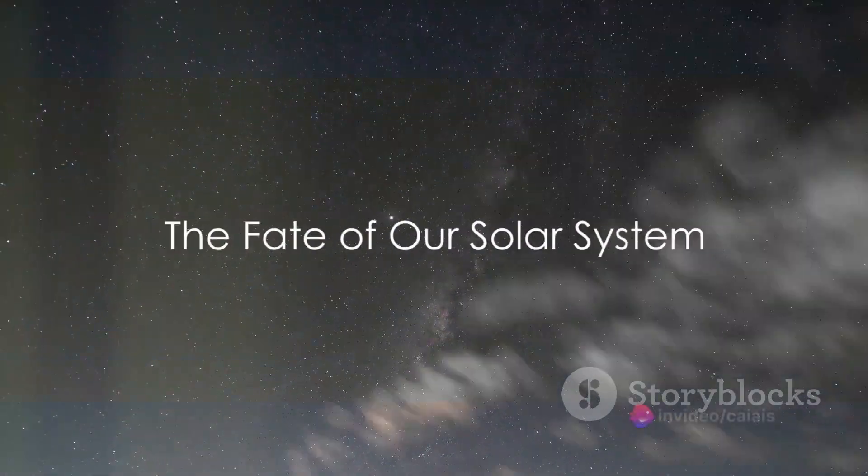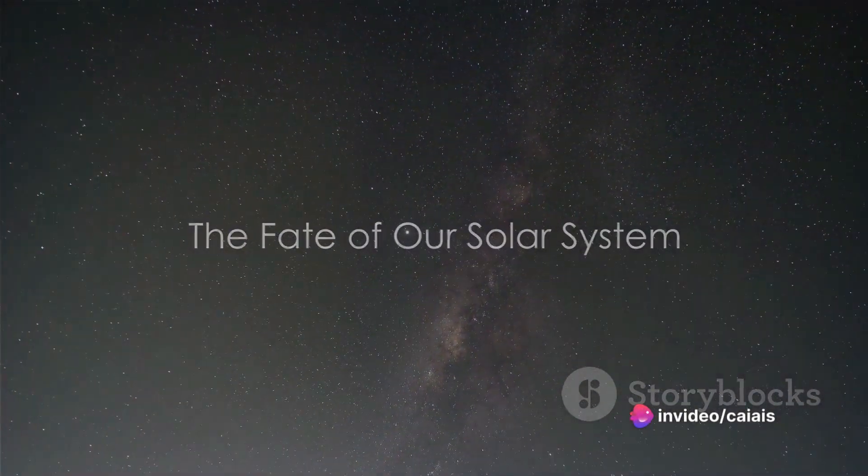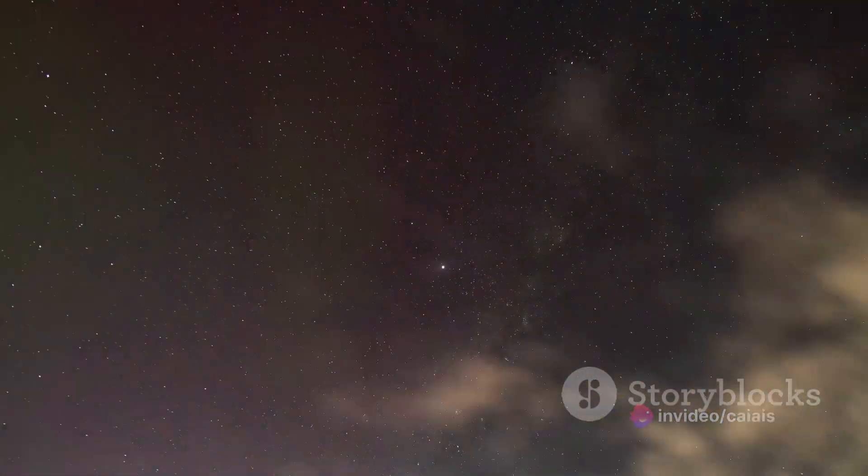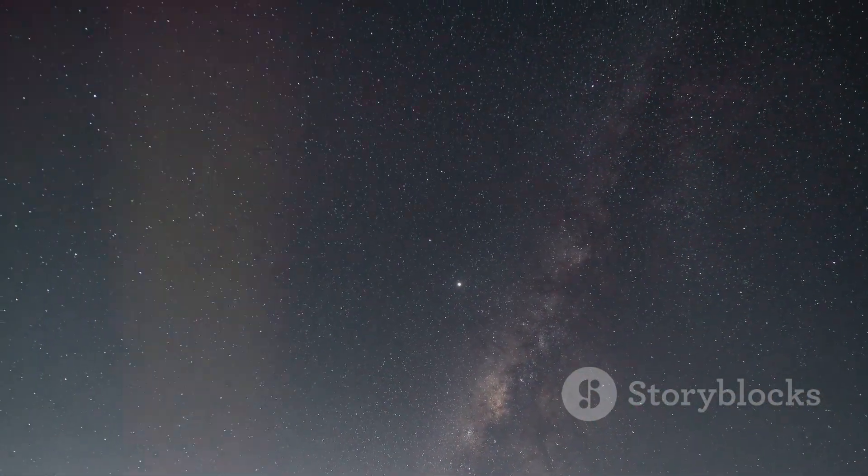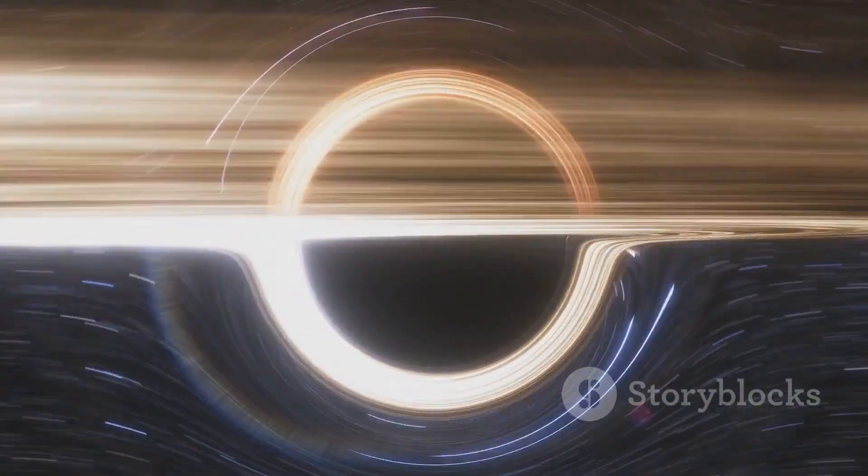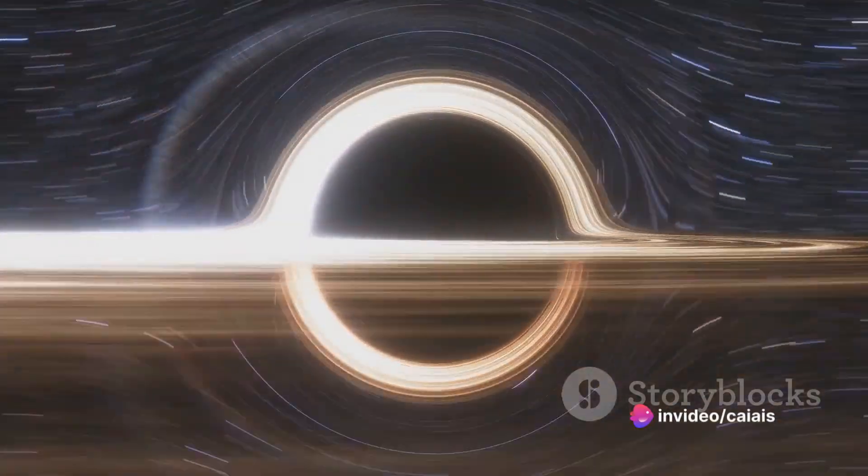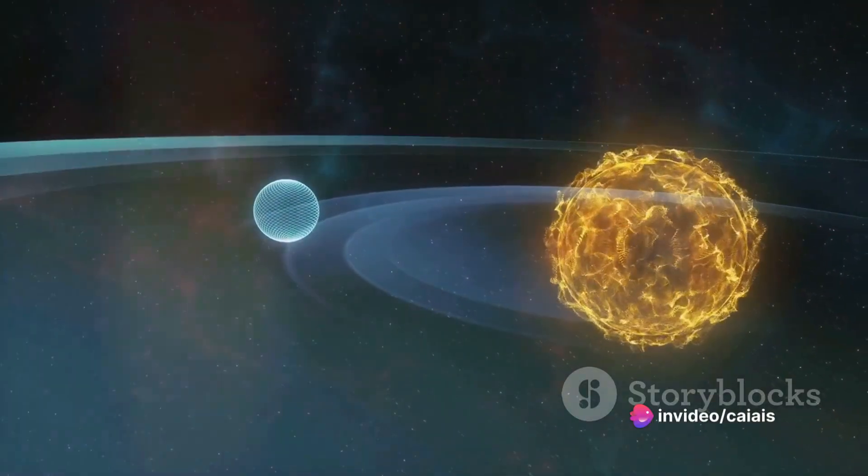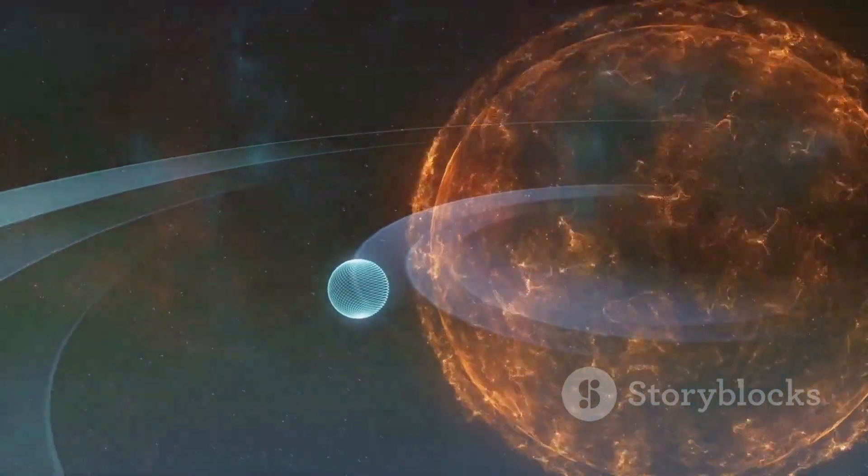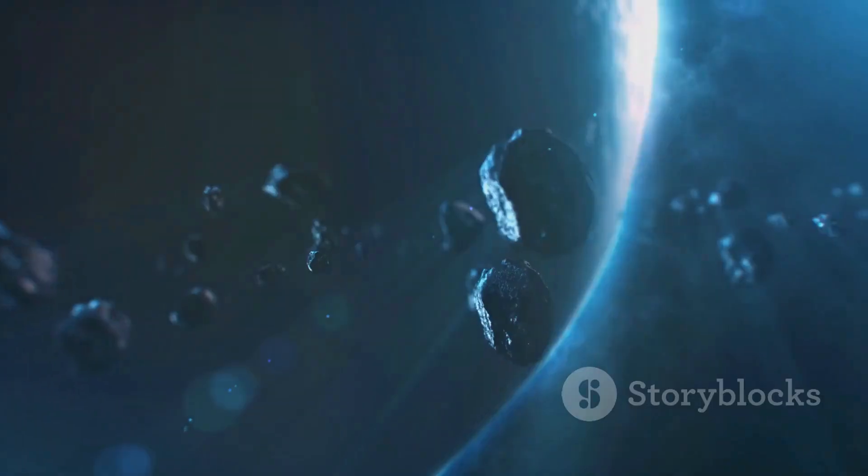Have you ever pondered the eventual fate of our solar system? An intriguing question, isn't it? Let's shed some light on a celestial phenomenon known as the clock star. This is not your typical star. It's a neutron star that devours everything in its vicinity. Now imagine our solar system in a distant future, when our beloved sun could potentially be swallowed by this all-consuming clock star.